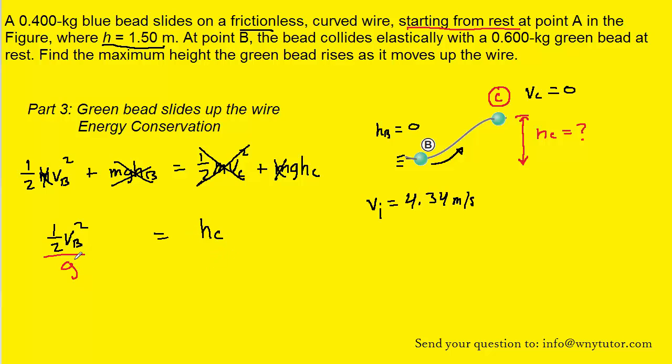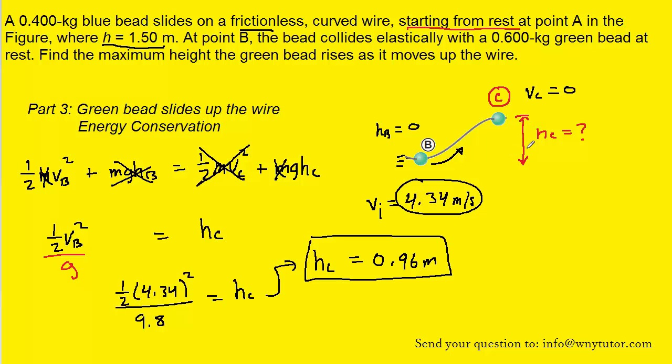And now all we have to do is plug in the speed at point B, which was determined previously as 4.34, and then the known value of g. And when we compute that on our calculator, we get HC to equal 0.96 meters. And that represents the height that the green bead will travel up the wire after it collided with the blue bead.